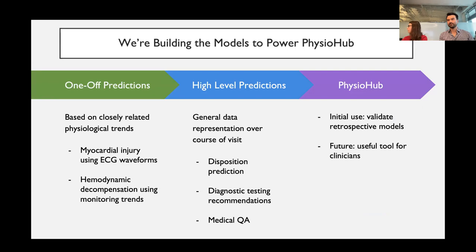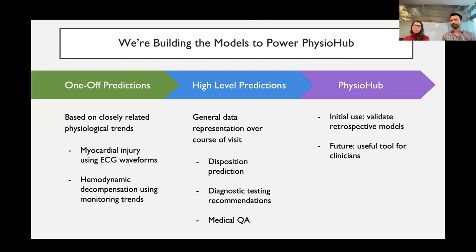Right now we're building out the models that are going to power PhysioHub. A lot of the models David previously talked about use single modalities of data — for example, looking at the ECG to predict myocardial injury. What we're trying to build are models that approach prediction problems requiring a more general representation of a patient's visit, using dependencies across different modalities of data.